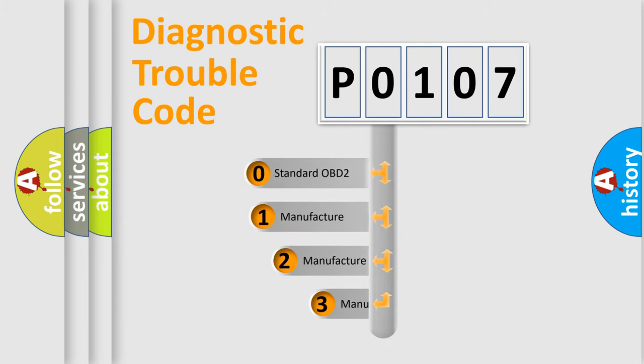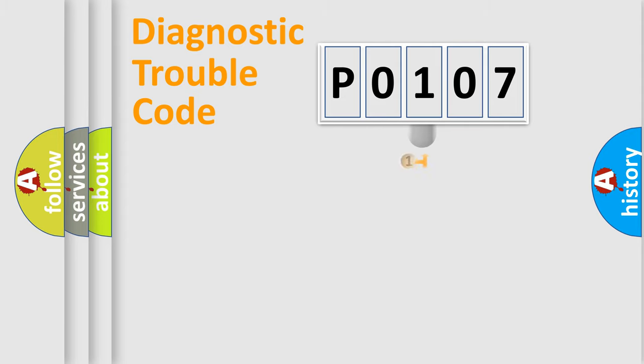If the second character is expressed as zero, it is a standardized error. In the case of numbers 1, 2, or 3, it is a manufacturer-specific expression of the car error.